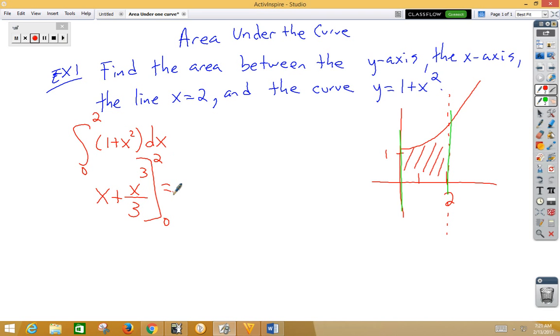If we plug in our 2, we get 2 plus 8 thirds. If we plug in our 0, we get, of course, 0 plus 0.